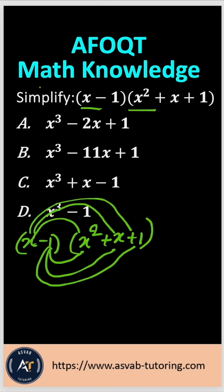So x times x squared gives you x to the third power. x times x gives you x squared. Then x times 1 gives you x. Now multiply with negative 1. So that gives you negative x squared. Negative 1 times x is negative x. Negative 1 times 1 is negative 1.